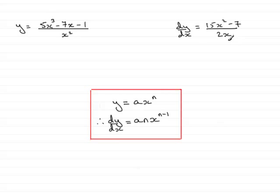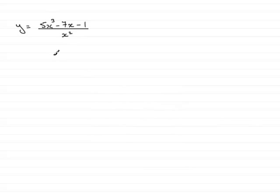So, how do we differentiate things like this? Well, to differentiate things like this, there's two methods. I'll show you both methods. What you can do is to think of this like this. We can take the x squared, think of it as 1 over x squared being multiplied by the 5x cubed minus 7x minus 1.